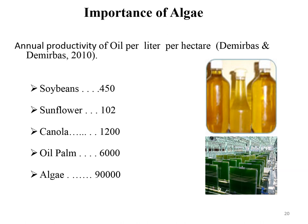Algae are among the most photosynthetically efficient plants on Earth and are easy to grow. The annual productivity and oil content of algae far exceeds seed crops: soybean produces about 450 liters of oil per hectare, canola produces 1,200 liters per hectare, palm produces 6,000 liters per hectare, whereas algae can yield 90,000 liters per hectare. Algae can grow anywhere there is enough sunshine, and some can grow in saline water.